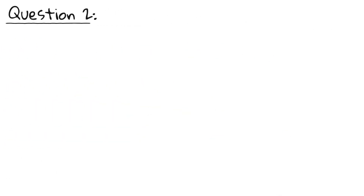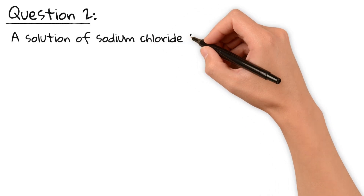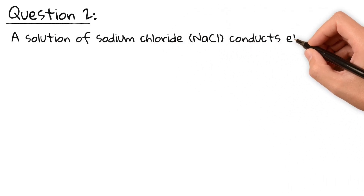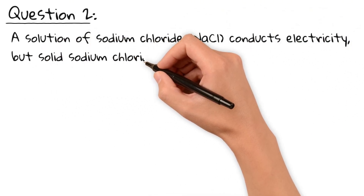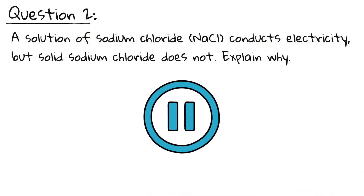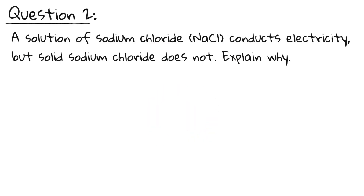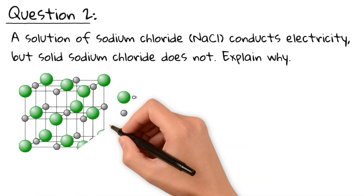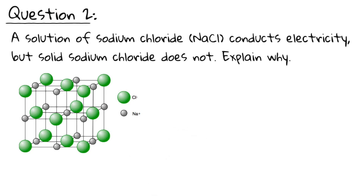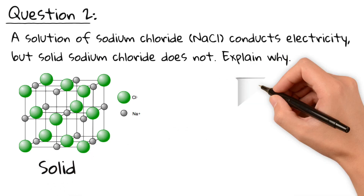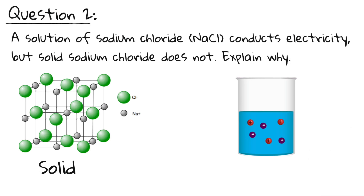Question 2: A solution of sodium chloride conducts electricity, but solid sodium chloride does not. Explain why. In solid sodium chloride, the ions are locked in place in a lattice structure, so they can't move. But when sodium chloride is dissolved in water or melted, the ions are free to move, allowing the solution to conduct electricity.